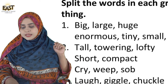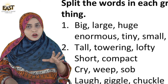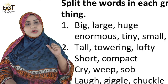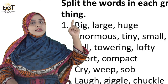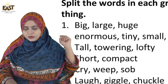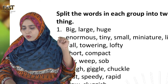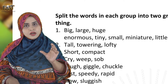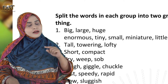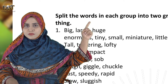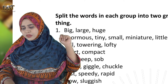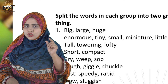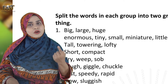Now 'Small'. Small kahan jaayega? Small ka matlab hota hai chota, so it goes into Group 2, with tiny. Now we have 'Miniature'. Miniature ki meaning hoti hai chota, so it goes into Group 2. And 'Little' — chota — so write little in Group 2 as well.